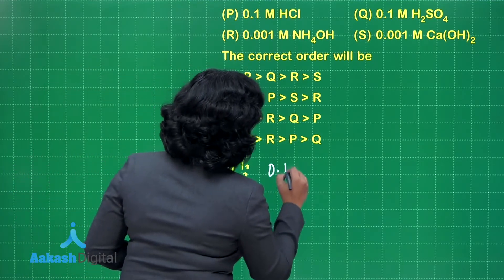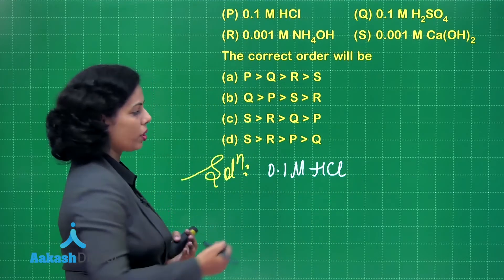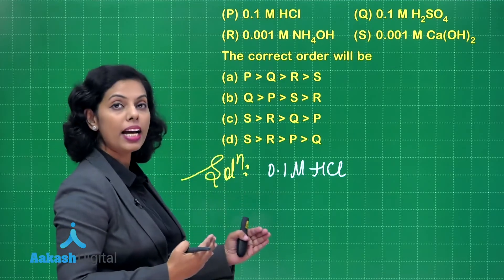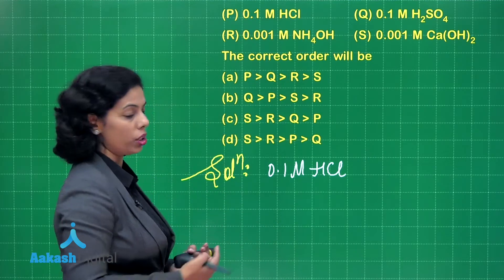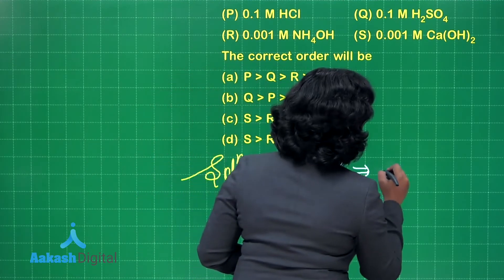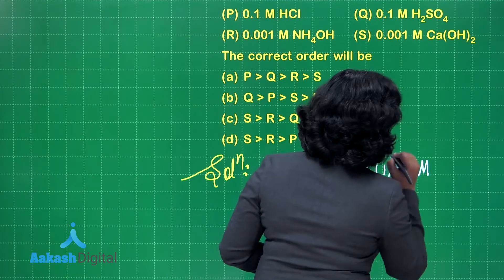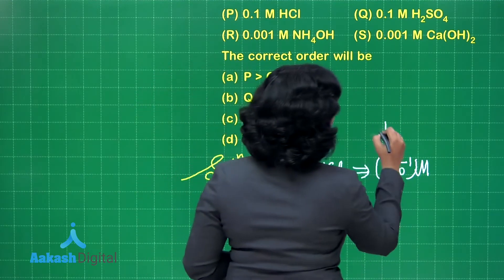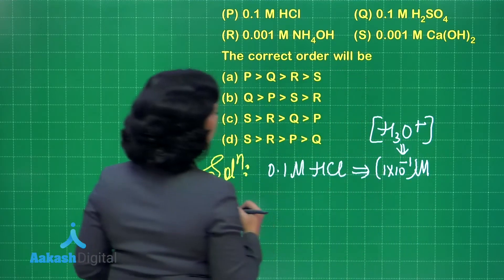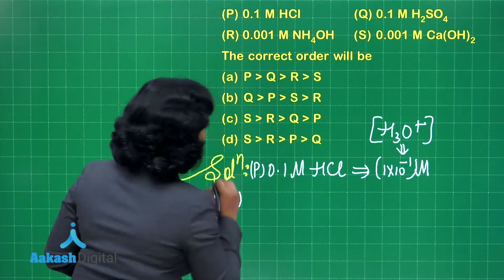For 0.1 M HCl (solution P): whatever the molarity of this aqueous solution, the same molarity of H⁺ or hydronium ion is present. So the hydronium ion concentration is 0.1 M, or 1 × 10⁻¹ M.